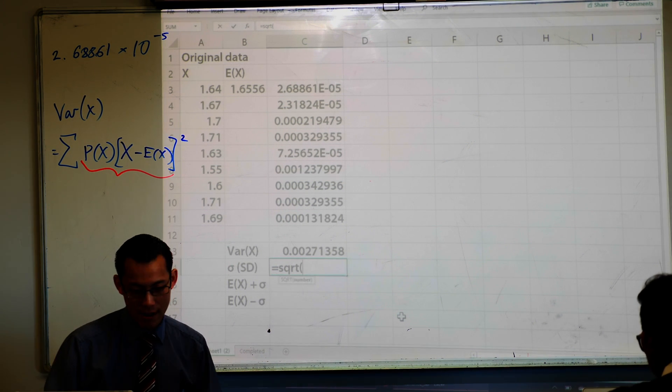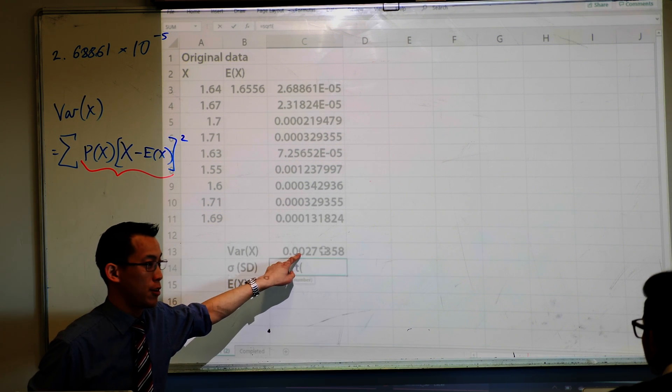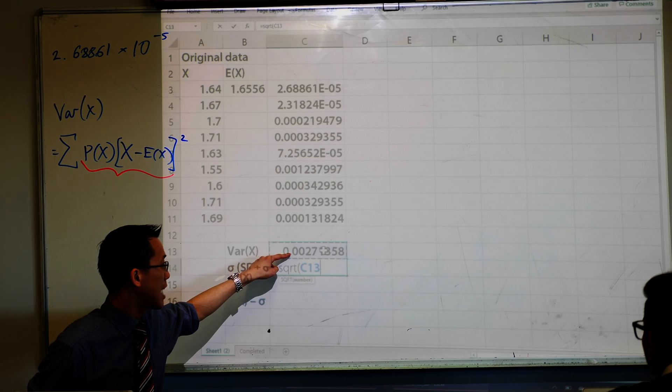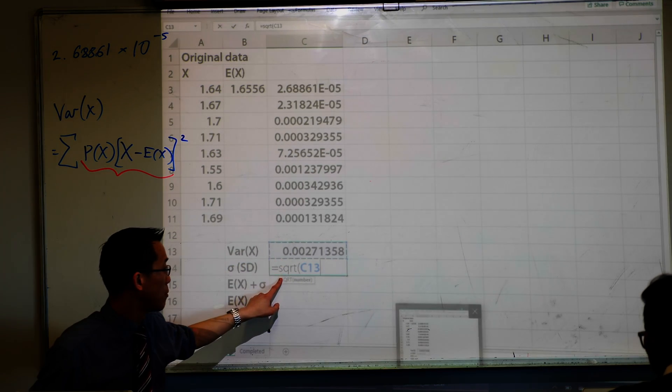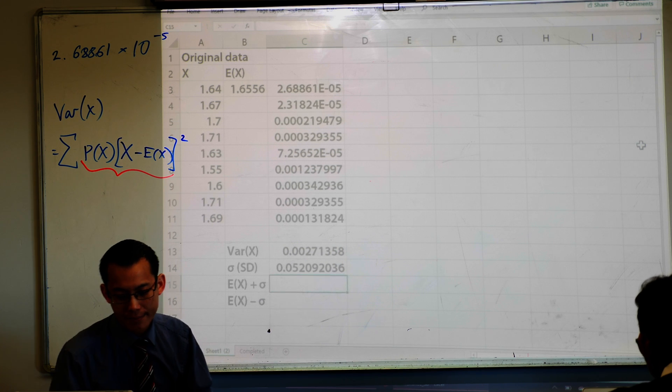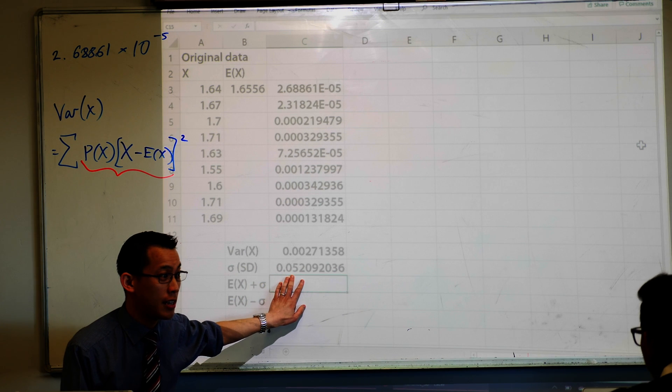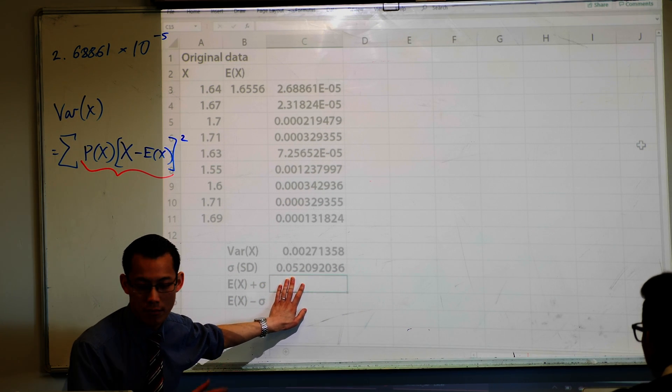Open a bracket to indicate, okay, now I want you to calculate the square root of this number, and to get that cell, you just tap on it. After you open the bracket, just tap there, and it'll put in the right cell number for you. Like so. Then close your bracket. So what's this mean? What have we just calculated? This is standard deviation.